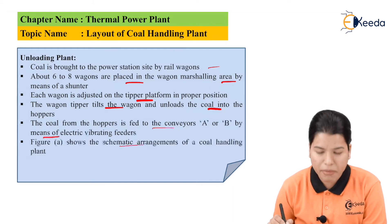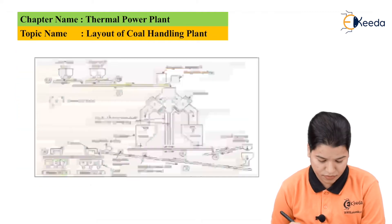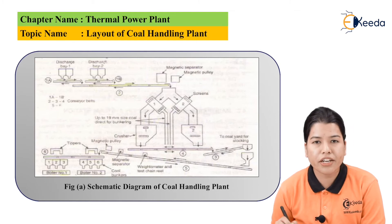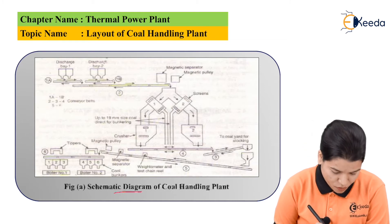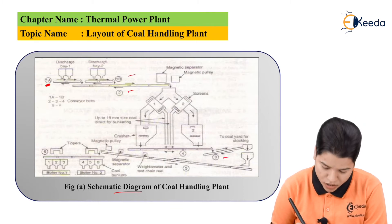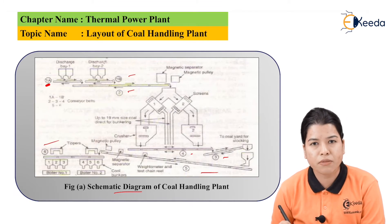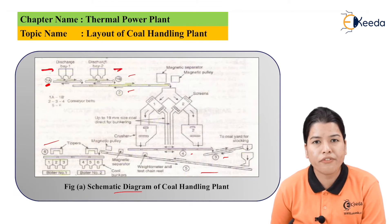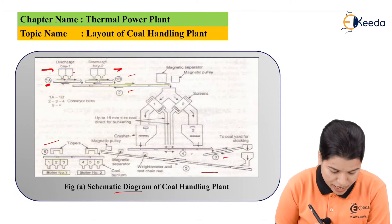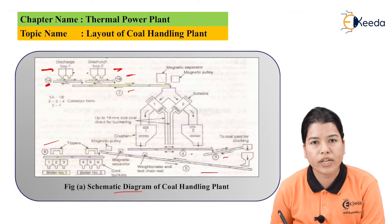Figure A shows the schematic arrangement of the coal handling plant. Let us study it in detail. Here we can see the schematic arrangement of the coal handling plant. It consists of a number of belts such as 1A, 1B, 2, 3, 4, 5, and 6, which are used for various purposes. The coal coming from the rail or any other transportation needs to be unloaded. These are the various hoppers, and by using belts 1A and 1B, the unloading of coal is done.